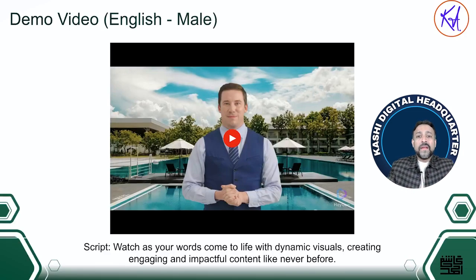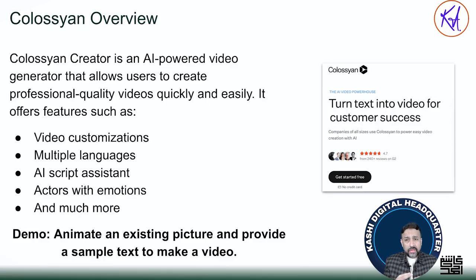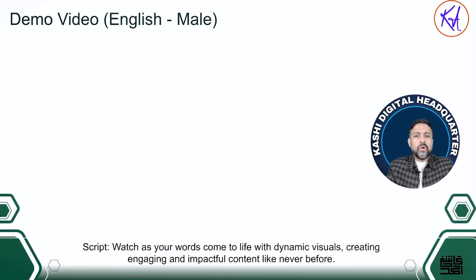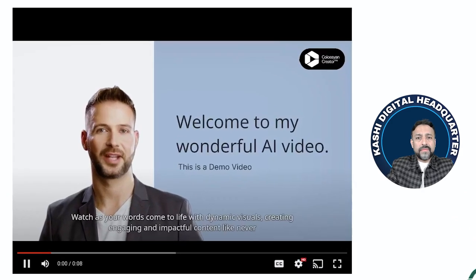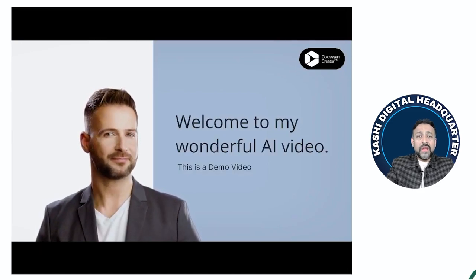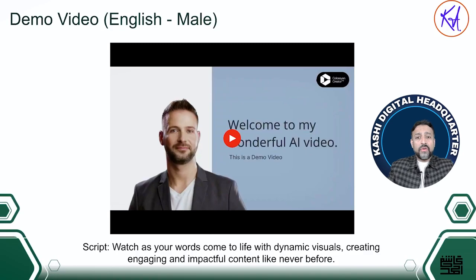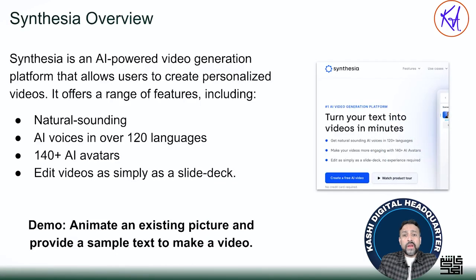There's another tool called Colossyan, which is a competitor to Synthesia and other video generation tools. It takes your text and turns it into videos, allows video translation and customization in different languages, can help you write a script, and has actors with emotions. Using the same prompt, I did a quick video — you can see the person moving more interactively, and this tool also automatically generated subtitles on the video from the script you provide.